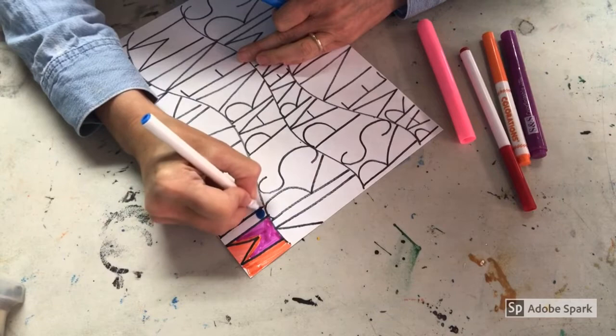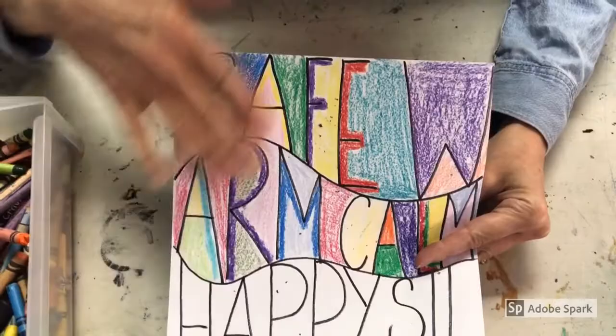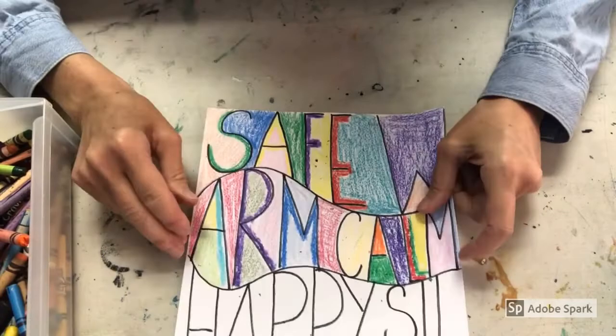You could even do some pattern in some of the spaces, why not? I think I'll do a little pattern of polka dots right here. That's going to add some more visual interest to your piece just like this. I finished the top two rows, I'm going to keep working on the rest of this off camera.